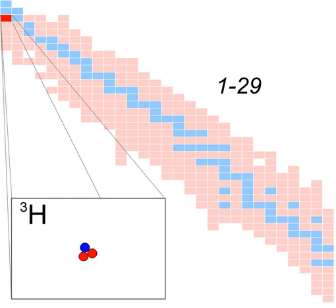Tritium or hydrogen-3 is a rare and radioactive isotope of hydrogen, with symbol T or ³H. The nucleus of tritium contains one proton and two neutrons, whereas the nucleus of the common isotope hydrogen-1, protium, contains just one proton, and that of hydrogen-2 contains one proton and one neutron.